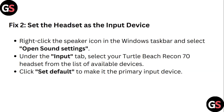Step 2: Set the headset as the input device. Right click the speaker icon in the Windows taskbar and select open sound settings. Under the input tab, select your Turtle Beats Rekon 70 headset from the list of available devices. Click set default to make it the primary input device.